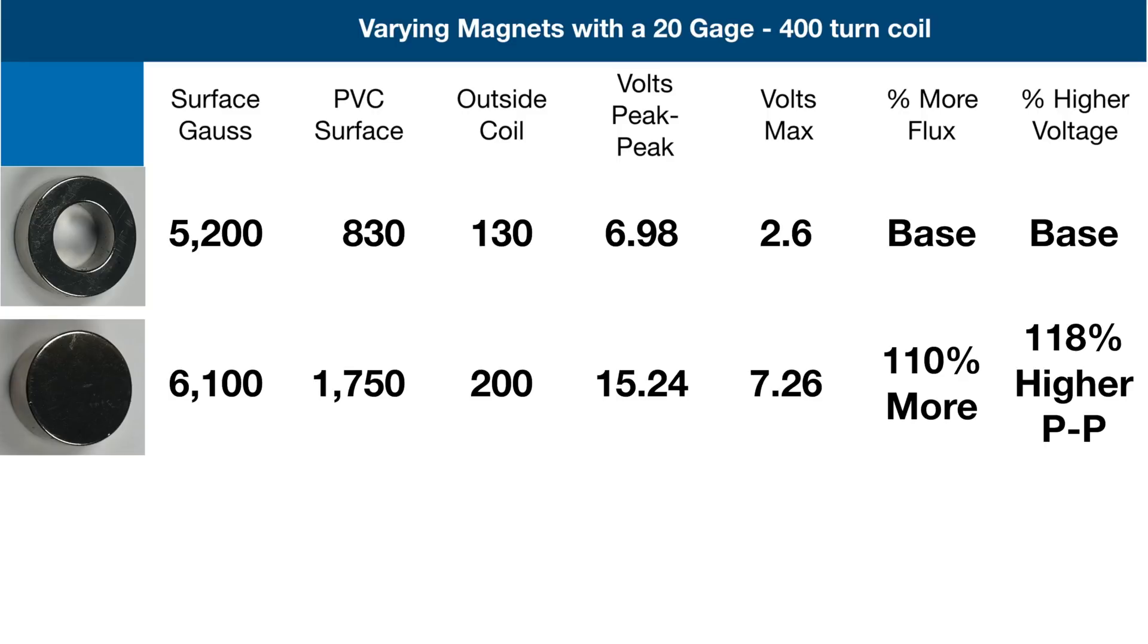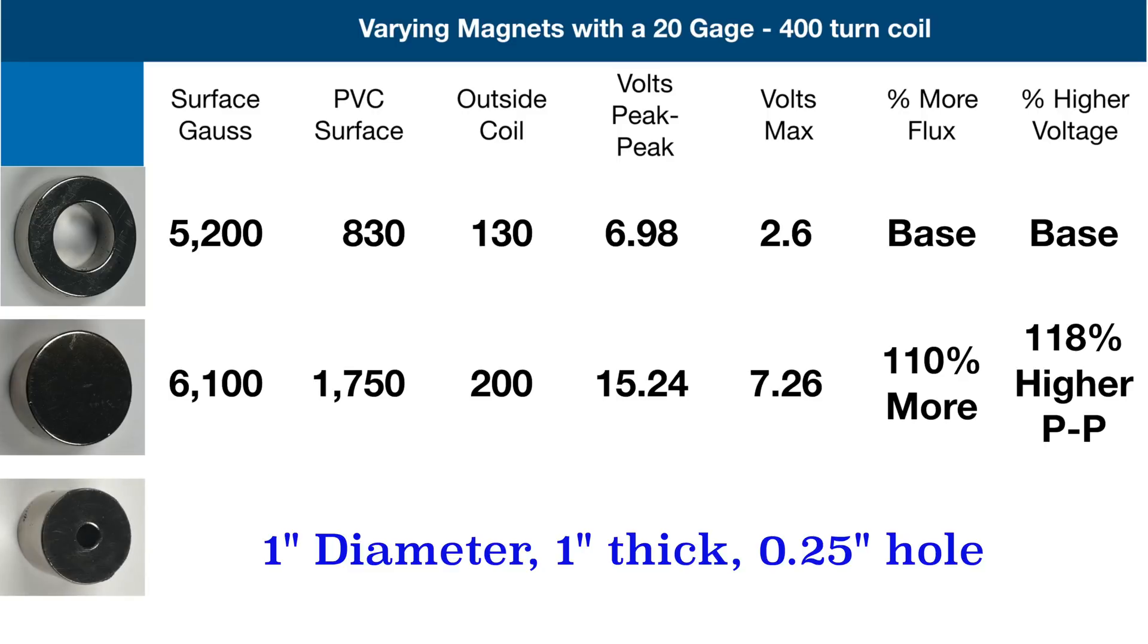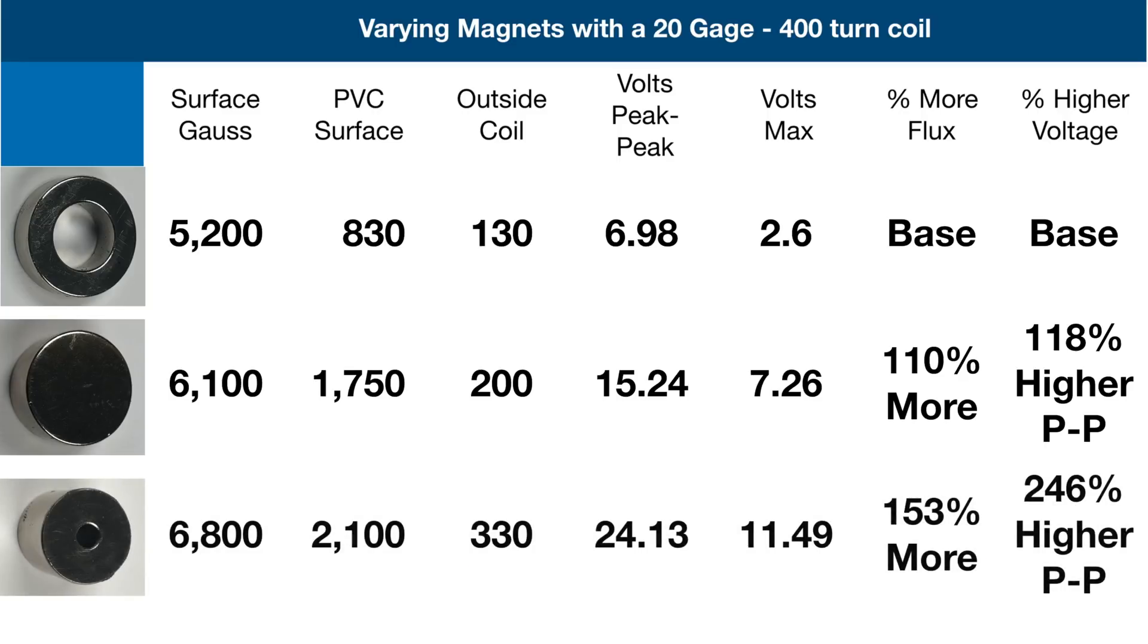Then we looked at our largest magnet, one inch diameter, one inch thick N50 with a quarter inch hole in the middle. That one gave us 2100 gauss on the inside of the coil surface, the surface of the PVC, and 24.13 volts peak to peak.